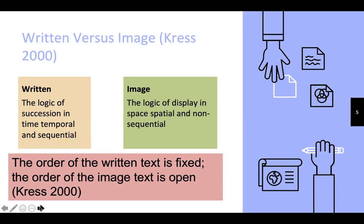Unlike written words, for image, we can put the elements in any order we like. So they are non-sequential — they don't have to follow the logic of sequence, but they follow the logic of display in space: spatial and non-sequential. So Kress says the order of the written text is fixed, while the order of the image text is open.